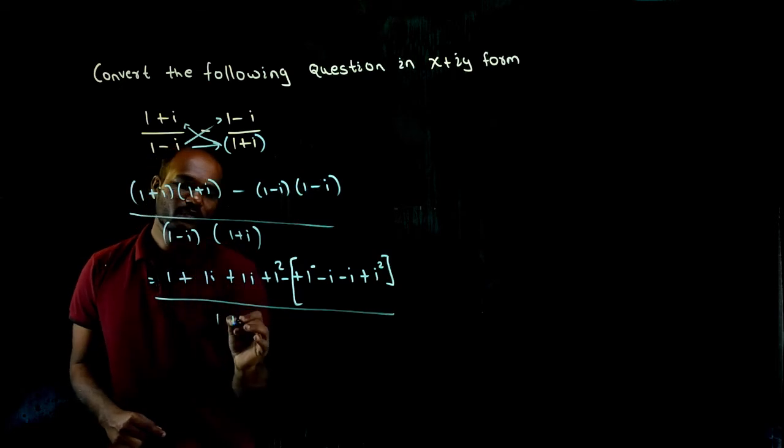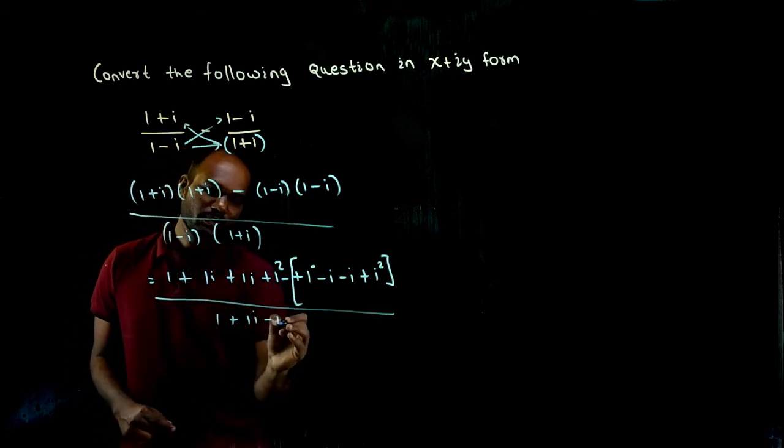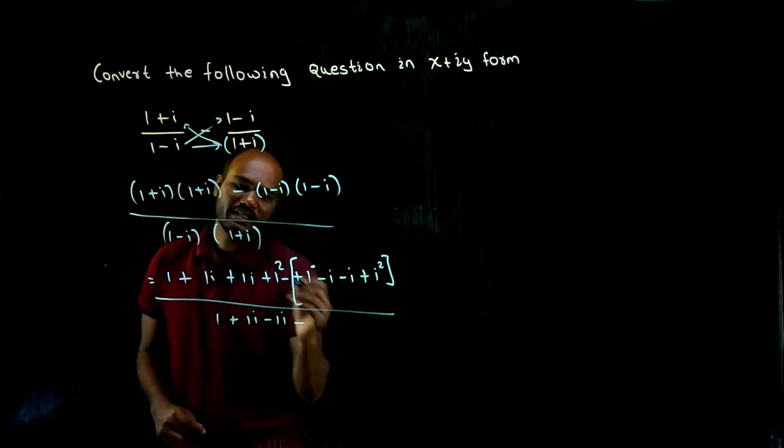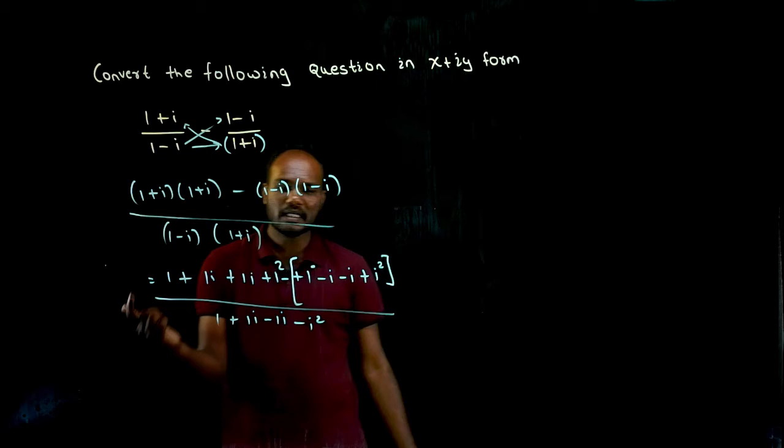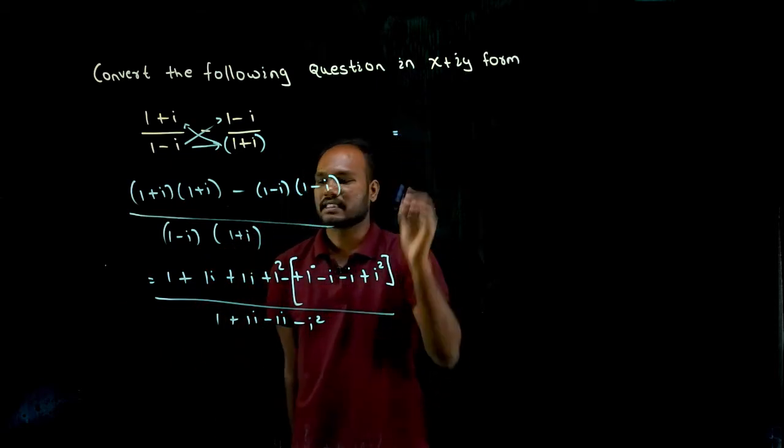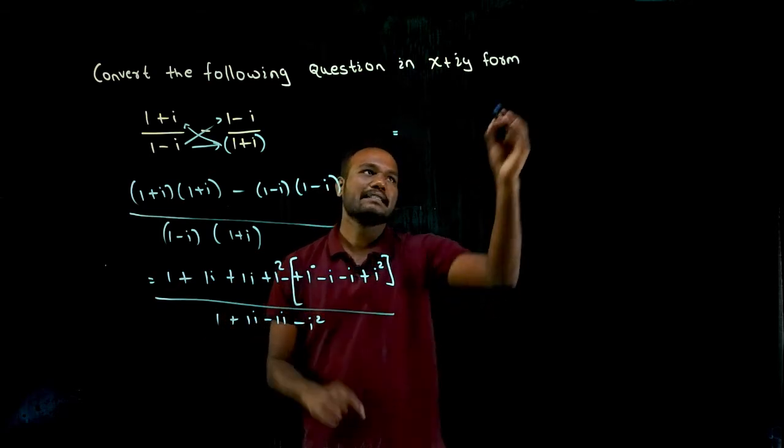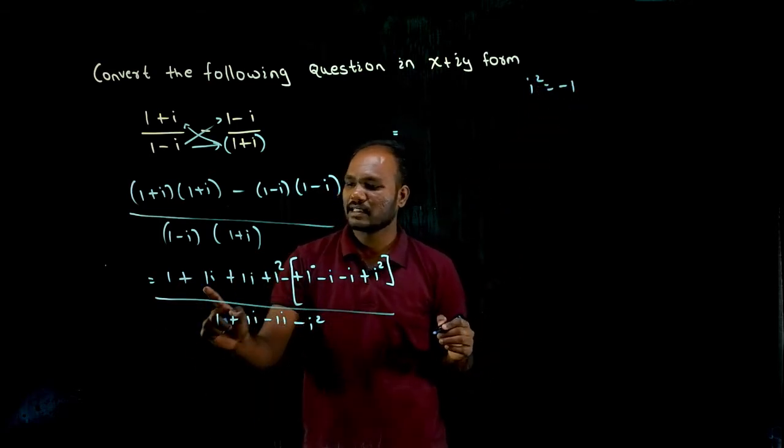This is just multiplication. So next, i square value is minus 1. i square value is what? Minus 1, so 1 and minus 1 get cancelled, 1i plus 1i is 2i.